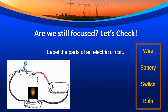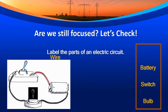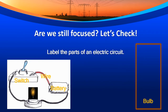Are we still focused? Let's check. Label the parts of an electric circuit. You are going to use the words from the box to label the parts. Wire — very good. Battery — excellent. Where is the switch? That's it. And the light bulb. Good job, students.